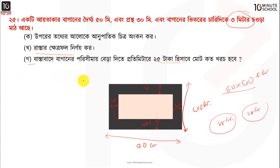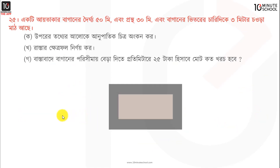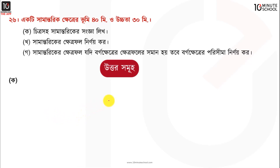মোট কতো খরচ হবে? এখন দেখো আমরা যখন জানি আমরা এখানে সমার হয়ে হচ্ছে আমার এই বাগানের পরিসীমা নেওয়া। তাহলে আমরা পরিসীমা বের করলাম। তার পরে আমরা ছাব্বিশ নং বালক উঠি দেখি। এখানে নামাদের বলছে একটি সমান্তরিক ভূমি হচ্ছে চওড়ালি।